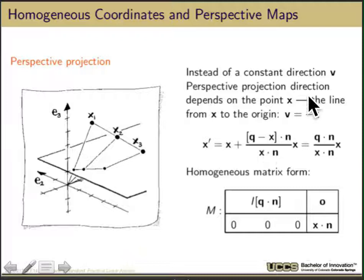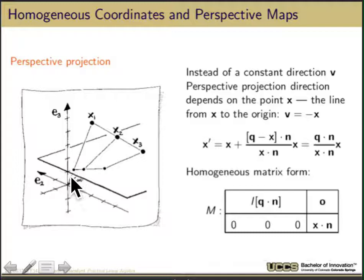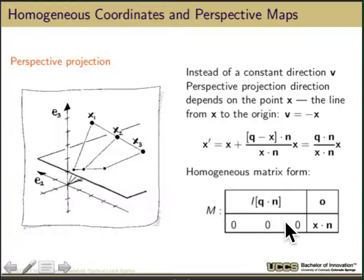Instead of having a constant direction, perspective projections depend on the points themselves. Points that are farther away are projected differently than those that are close. We can write: x' = (q - x)*(q·n) / (x·n) + x*(q·n)/(x·n). As I get points farther away, the direction q - x keeps changing. In homogeneous coordinate systems, this is represented as I*(q·n) - n in the upper block, zeros, with x·n as the normalizing factor.